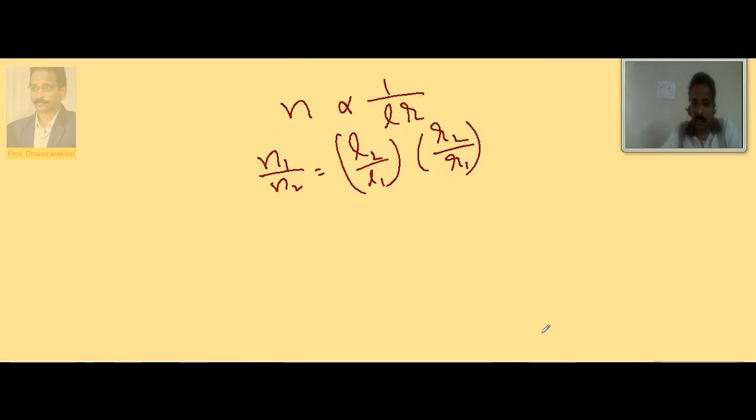So data suggests L and 2L are the lengths. So this is 2L by L.